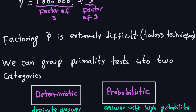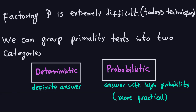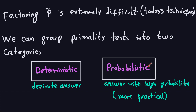We can group primality tests into two categories. Deterministic tests tell us with exact precision whether a number is prime, but they usually take a long time. Probabilistic tests answer with high probability and are much faster, making them more practical. Since RSA is all about practicality and the probability can be made very high, we will concentrate on probabilistic primality tests.